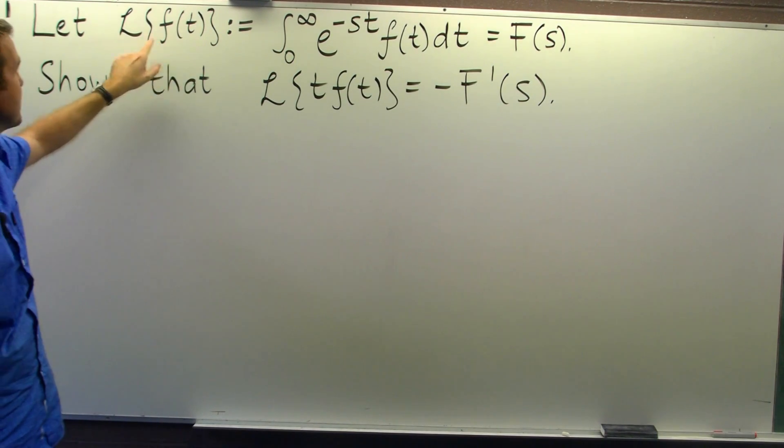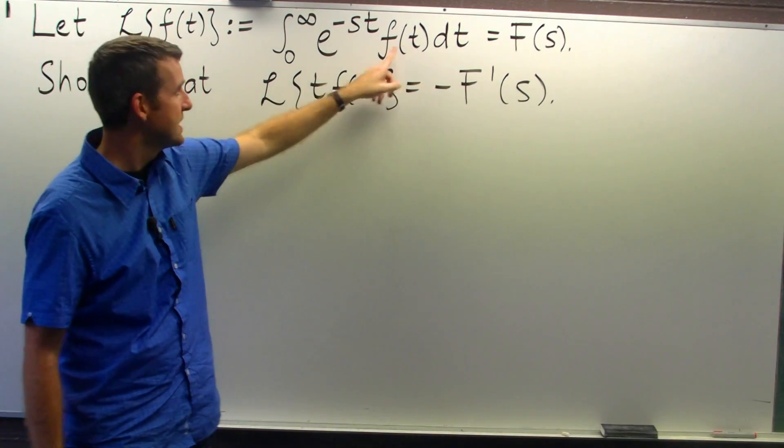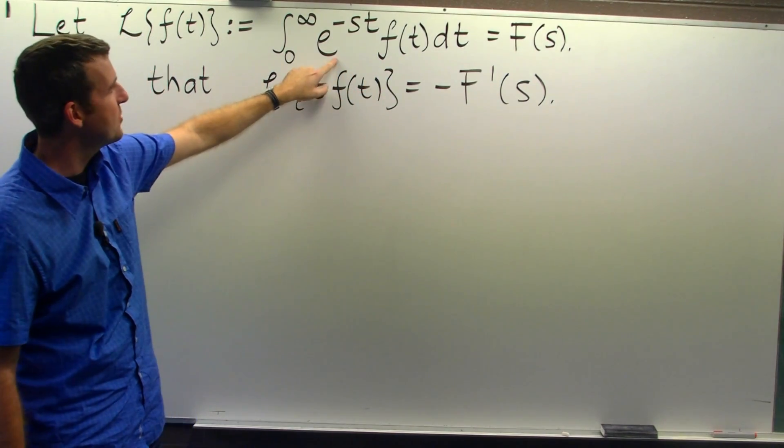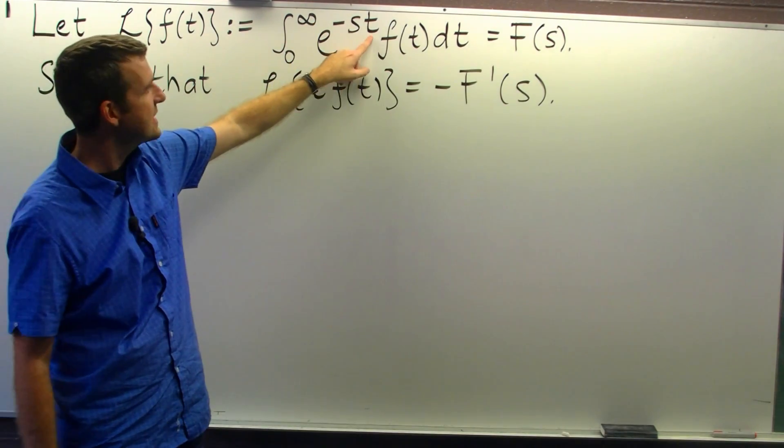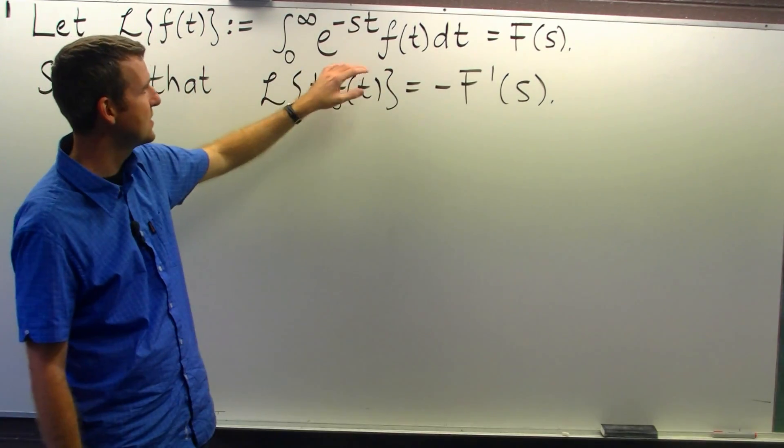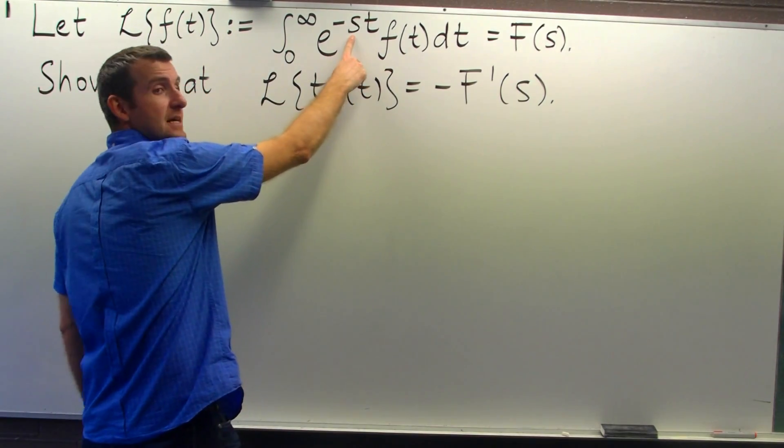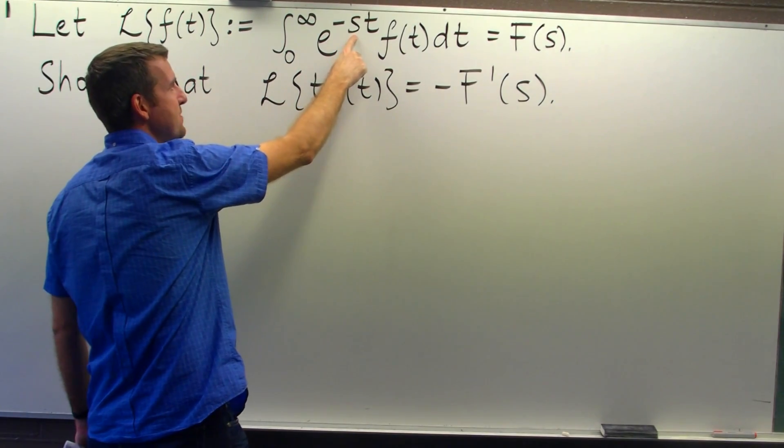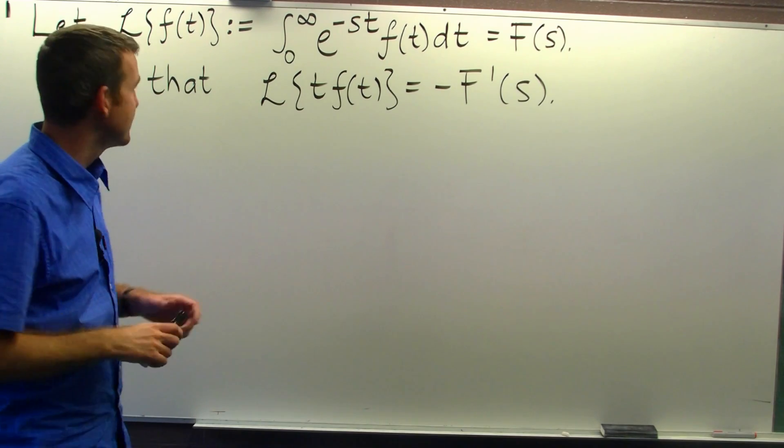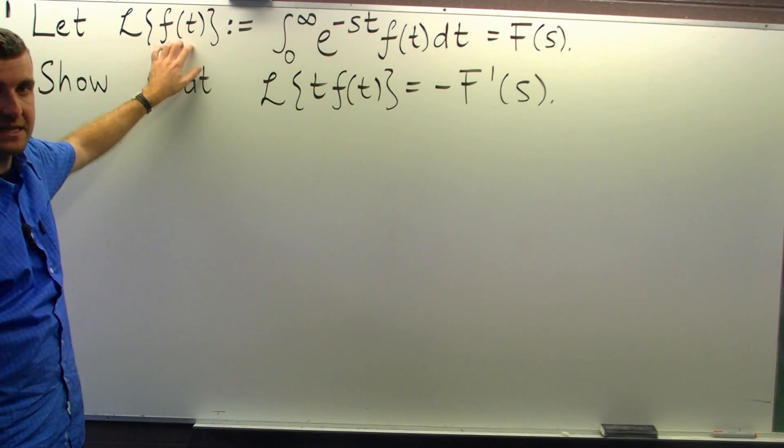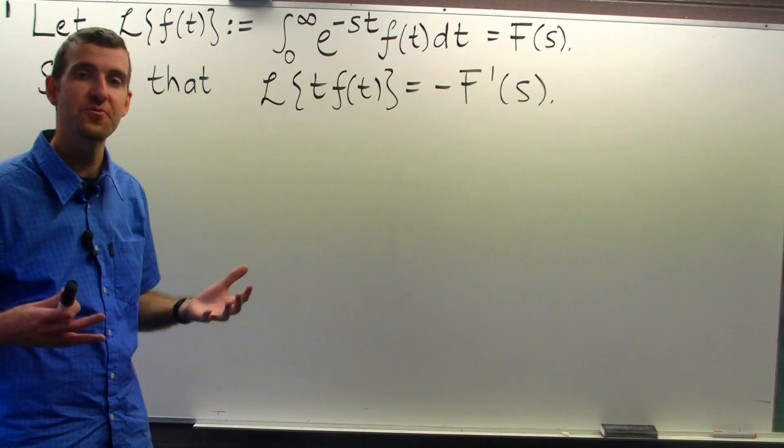Up here, this is the notation we use for the Laplace transform of a function of t, little f of t. And it's an integral transform. You can see that we take little f of t, multiply by this exponential function, and then integrate over this half line. Notice here that t is the dummy variable, so it disappears after we do any integrations. The s here is the real variable, the independent variable. So you can think of this as being a function of s, big F of s. So the notation we generally use is, little f of t is some function of t, and the capital, big F of s, is the Laplace transform of little f.